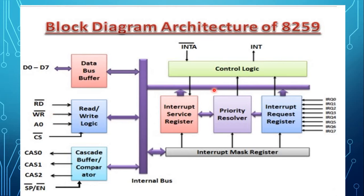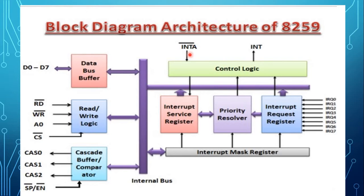The third block is the control logic. It has two signals: the INT signal and the INTA signal. It generates an INT signal and receives the INTA signal. The INT signal is an output signal and INTA is the input signal. These signals are used to control all the other blocks in the 8259.